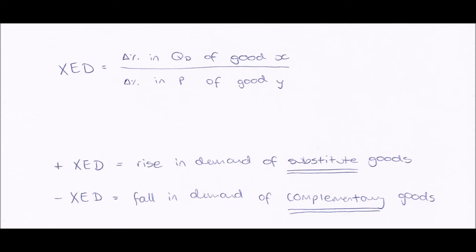Just as with income elasticity of demand, we are looking at the symbol in front of our cross elasticity of demand number — not the number itself, more the symbol. So if we have a positive cross elasticity of demand number, this means that the two goods we're examining are substitute goods. If we have a negative cross elasticity of demand, then our two goods are complementary goods.